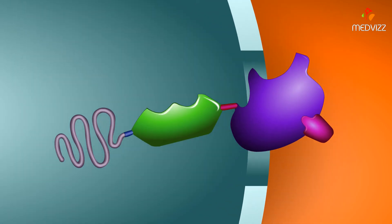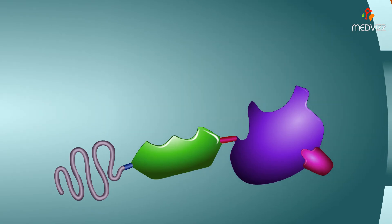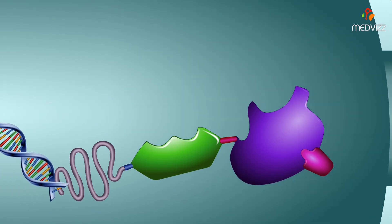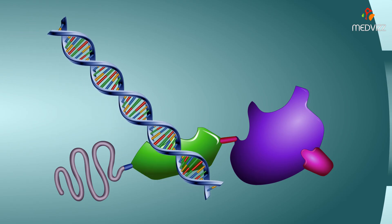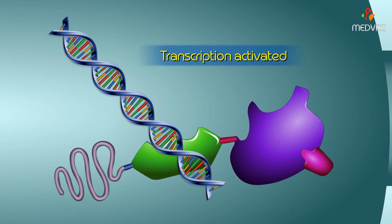The receptor then enters the nucleus and binds to a specific nucleotide sequence on the DNA, which activates transcription of a particular gene, usually located adjacent to the regulatory site.